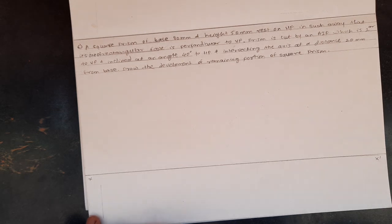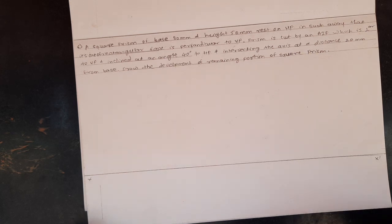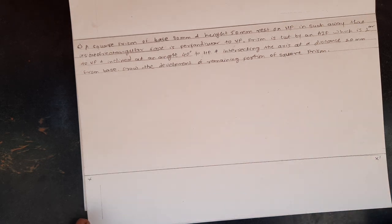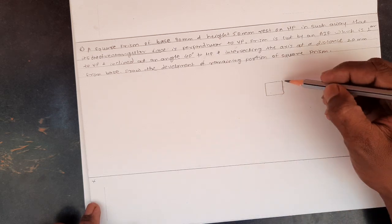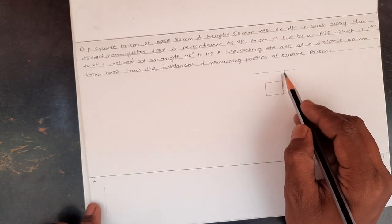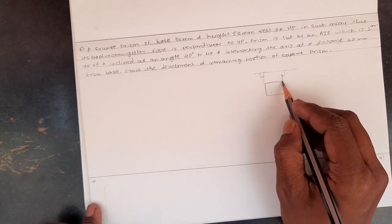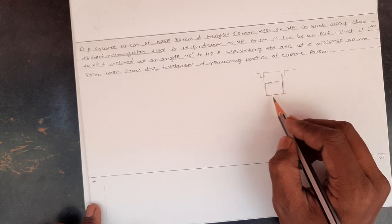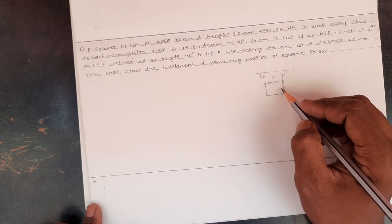The square prism has six rectangular faces — four vertical faces and two horizontal faces, one at the base and one at the top. One of the rectangular faces is perpendicular to the VP, and the two faces on either side of it are also perpendicular to the VP. The remaining two faces are parallel to the VP. So we have to draw the square in the top view in this orientation.